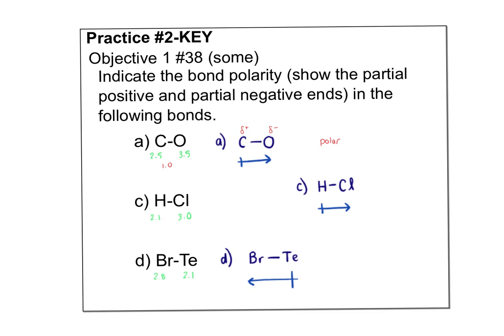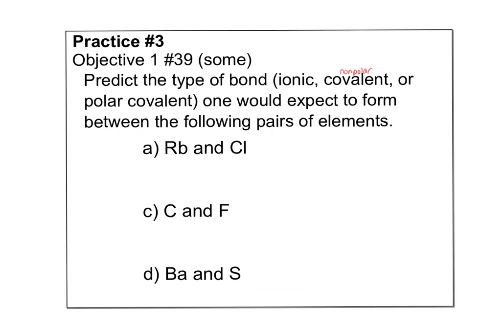On the next one, 3.0 minus 2.1, I get 0.9. That is also a polar bond. And in this case, because chlorine has the larger electronegativity, it is the partial negative. On this guy, I get a difference of 0.7. Bromine is the more electronegative, so it gets the partial negative sign.